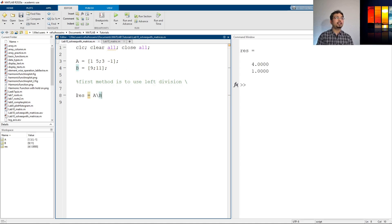So if we run it the RES variable result has two elements x and y, so we have four and one as our solution. So four is for x and one is for y. So if we use this left division method from here we can see the solution of our system of equation is four and one.